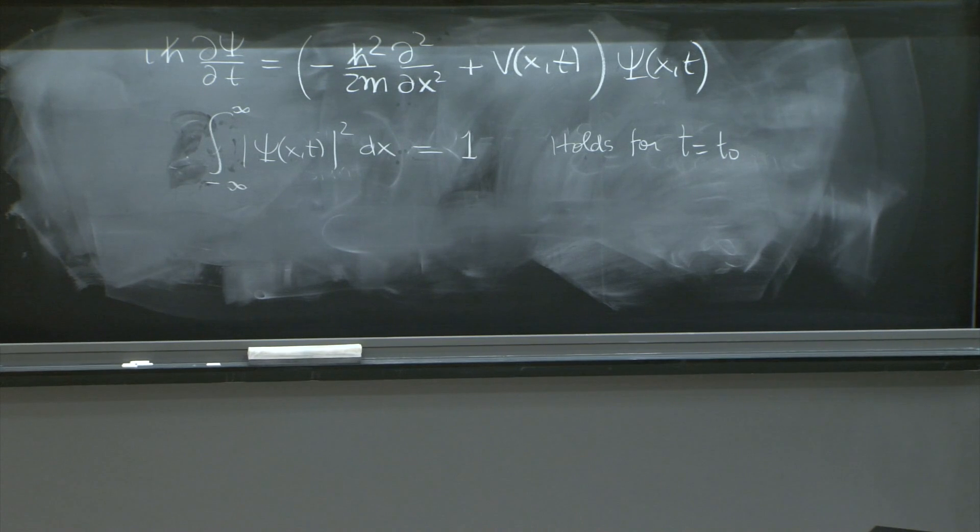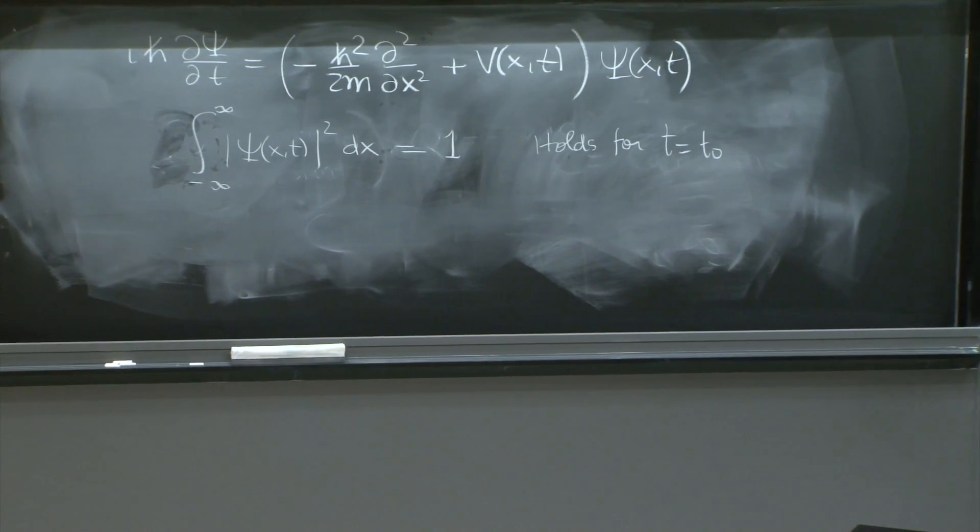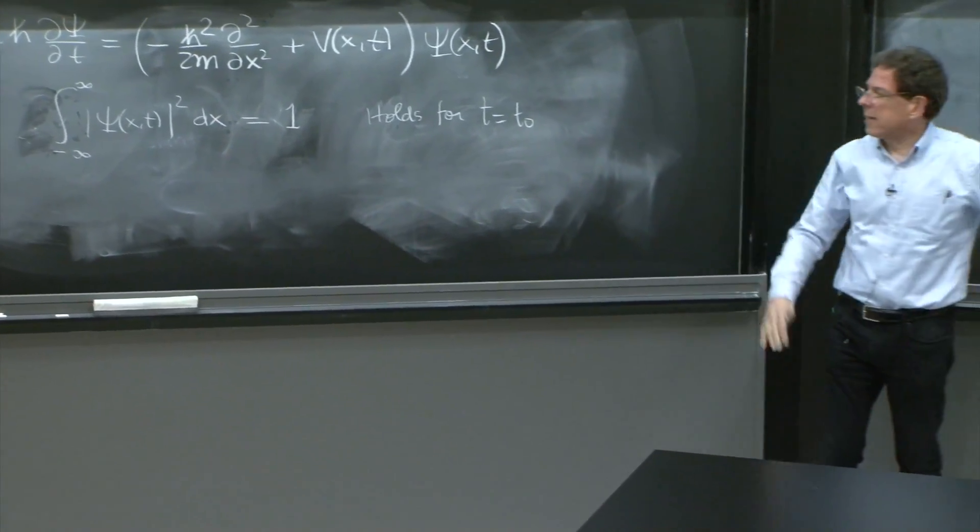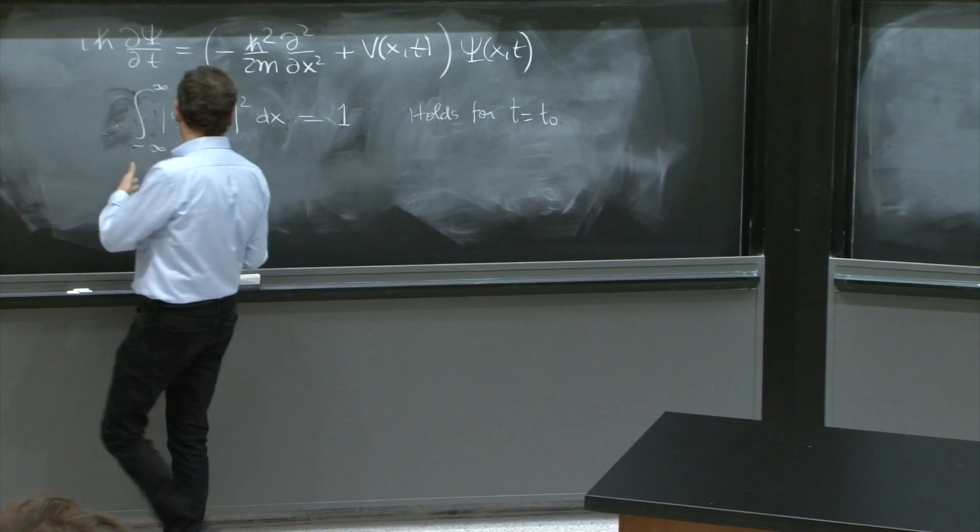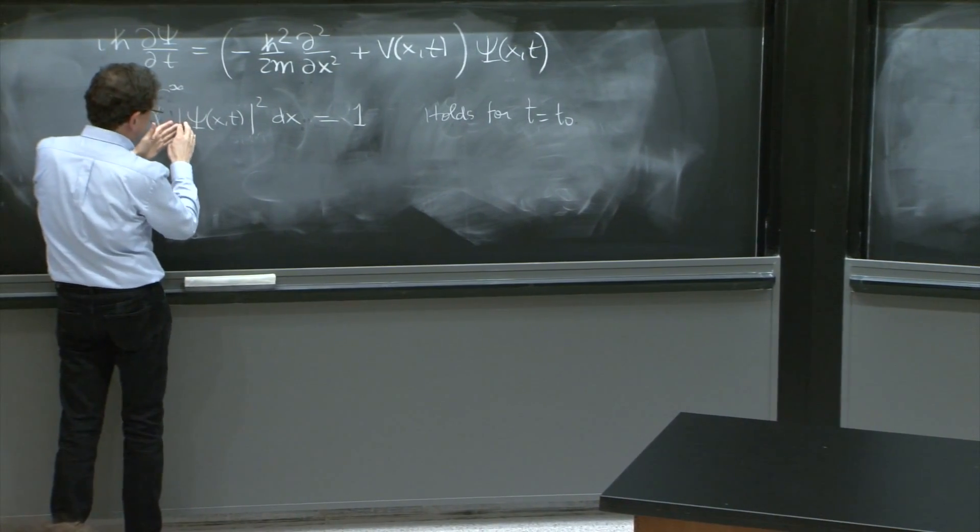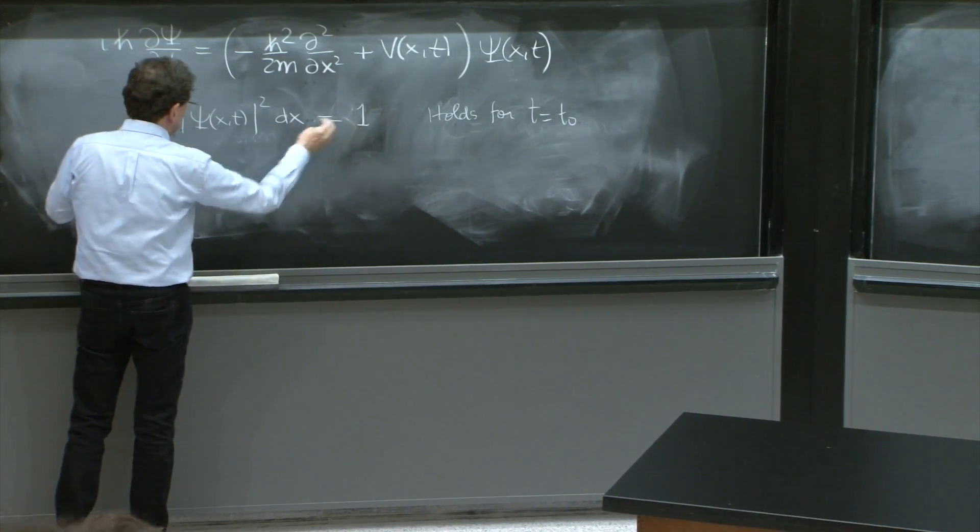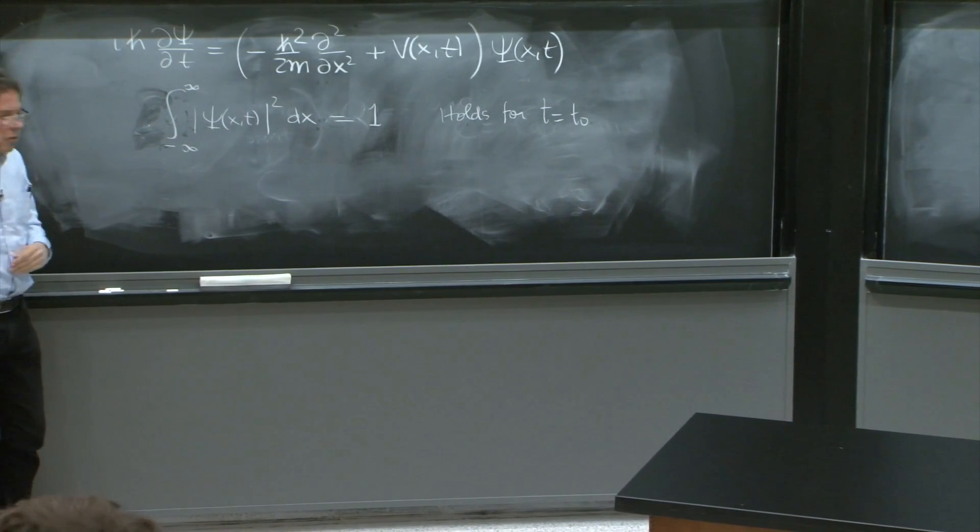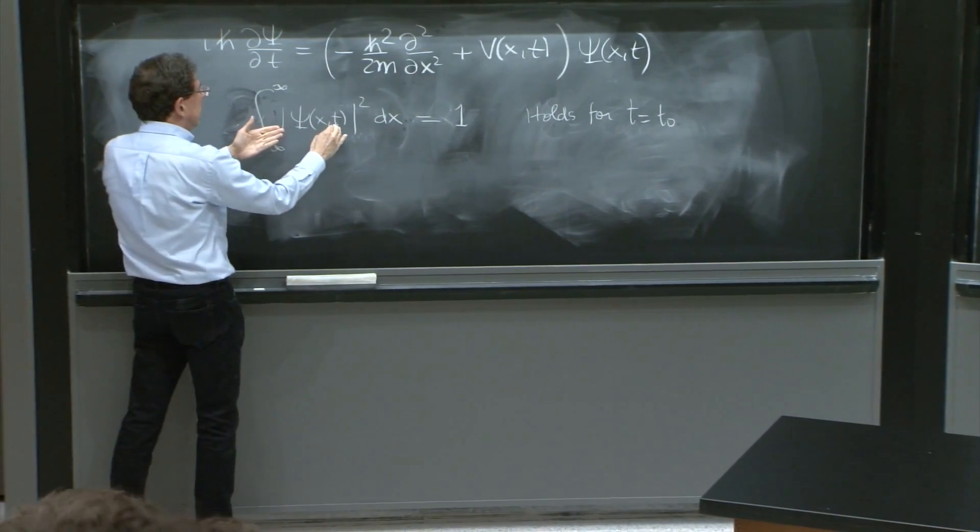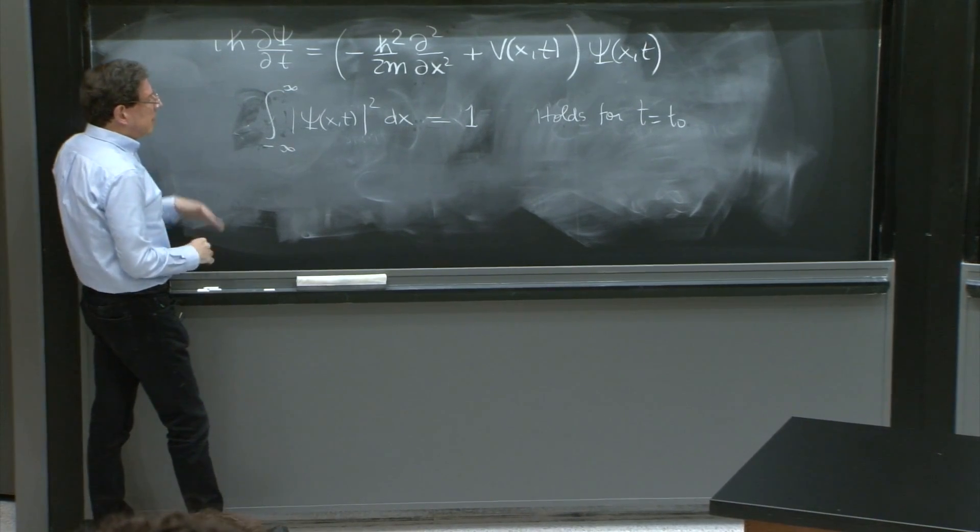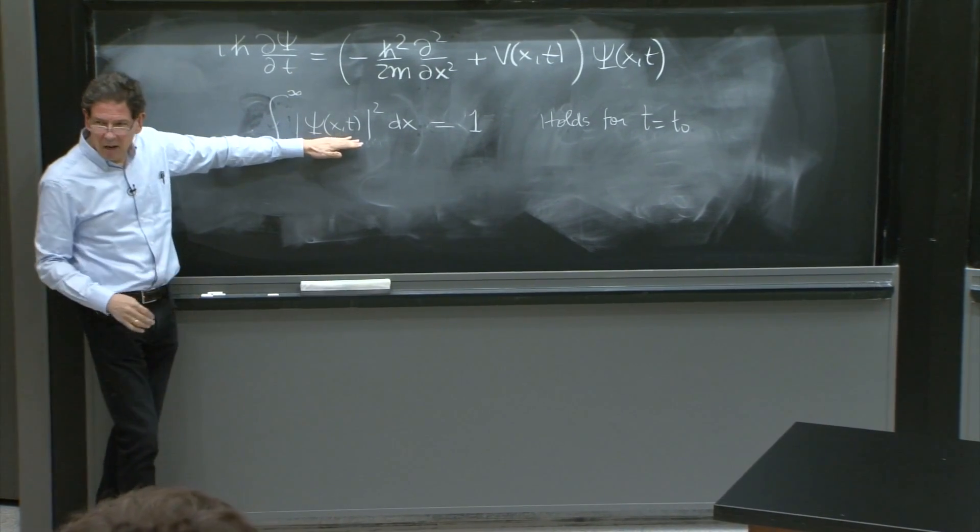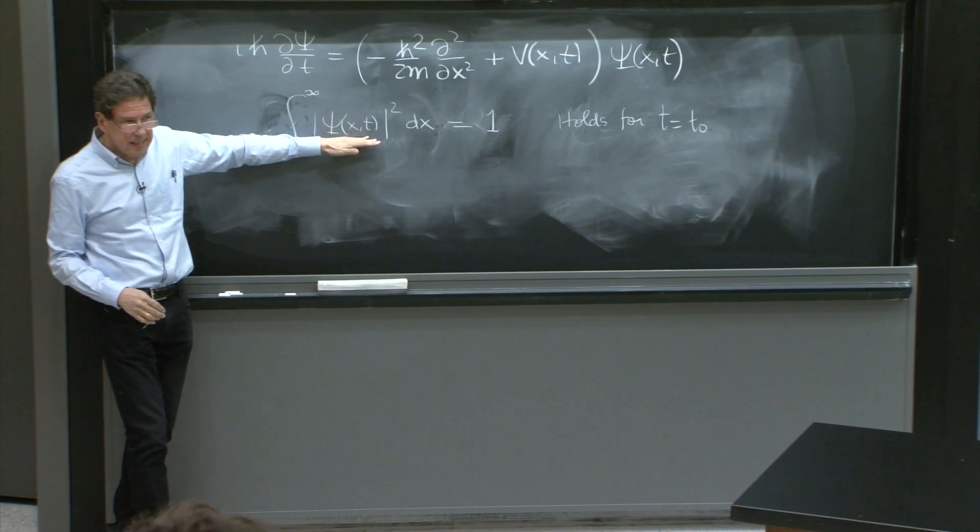Then the Schrodinger equation - if you know the wave function all over space for t equal t0, which is what you would need to know in order to check that this is working at time equal t0, you take the psi of x and t0 and integrate it.